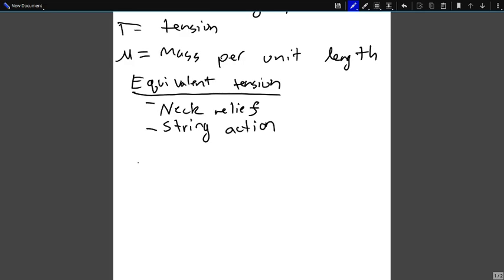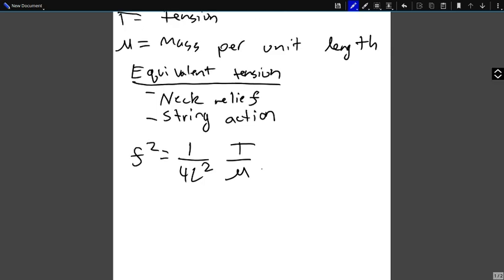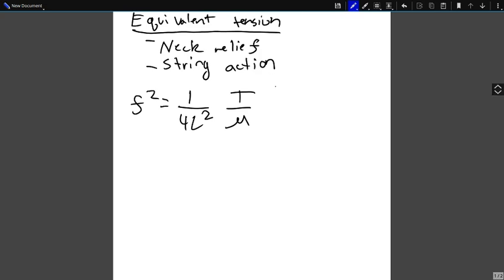So let's manipulate this equation a little bit. Let's square both sides first. Now we care about gauge. That's what our analysis is trying to figure out in the different tunings. So we're interested in this variable, the mass per unit length. So let's solve for that variable. First we'll cross multiply, and then divide by everything other than the term mu.